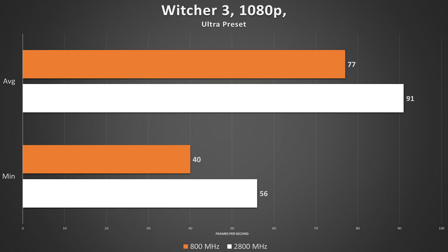Witcher 3 is our graphics-intensive game of choice, and it shows here. While the underclocked RAM did impact performance, it didn't do so to the degree I expected. Our overall average dropped by 14fps and our minimum by 16fps — still not bad for a GPU-bound title.